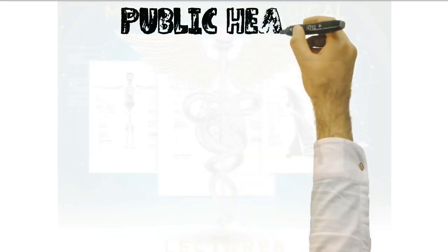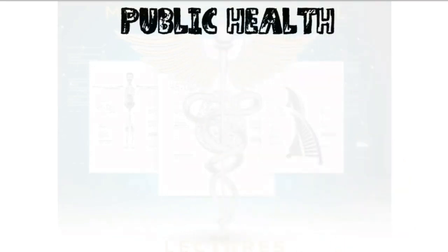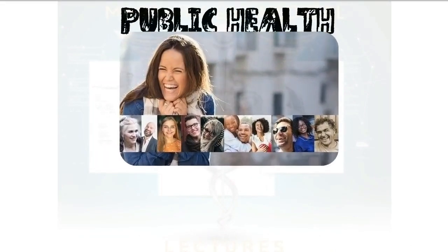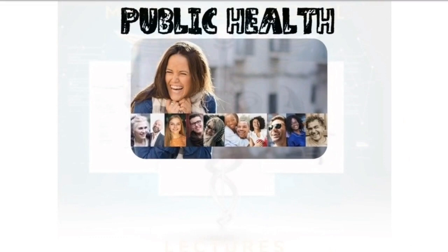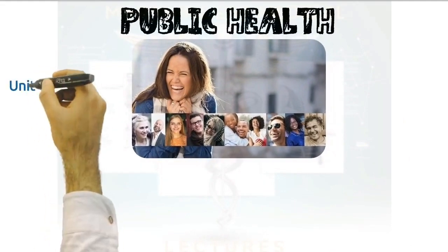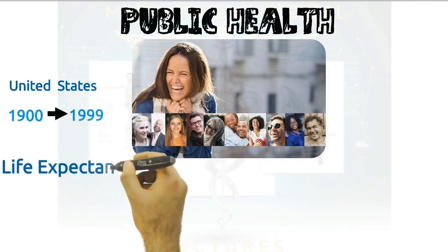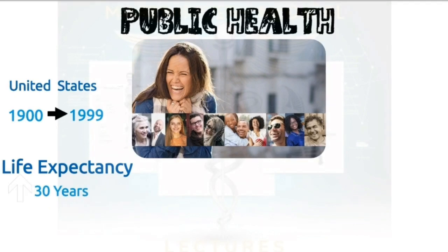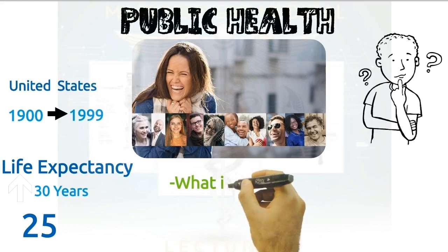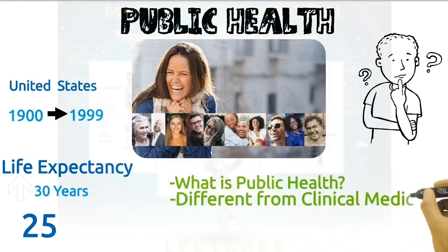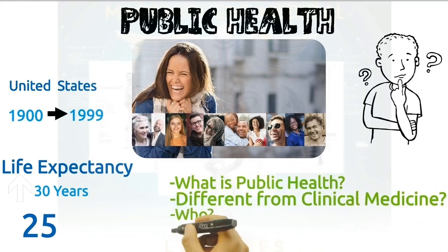Welcome to this video. We're going to have an overview of public health. Public health has made a significant impact on the health of populations, making people healthy and saving lives. For example, in the United States between 1900 to 1999, people's life expectancy increased by over 30 years — 25 of these extra years gained are due to public health interventions. In this video we'll look at what public health is, how it's different to clinical medicine, who's responsible for doing it, and how it's done.